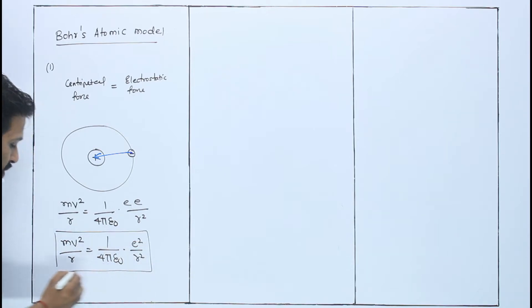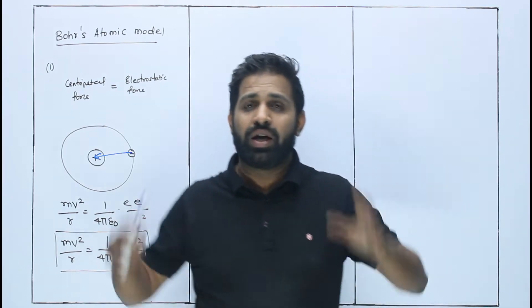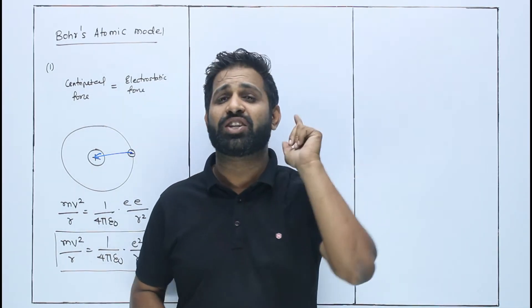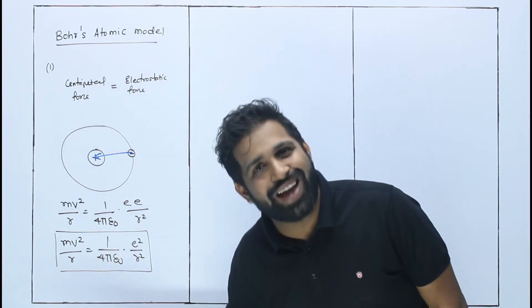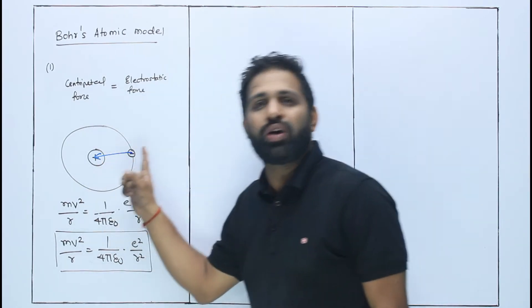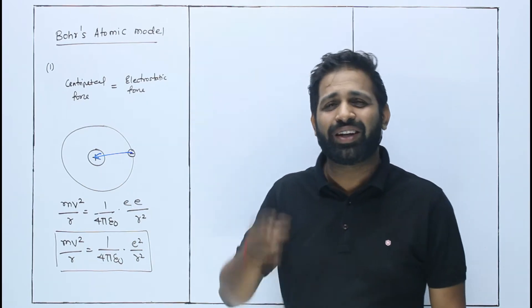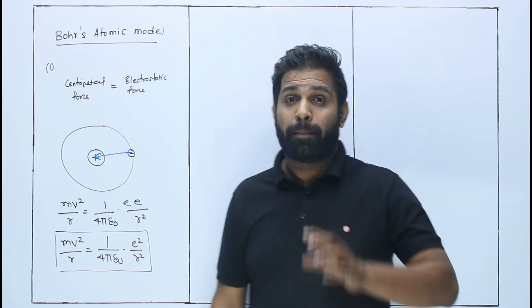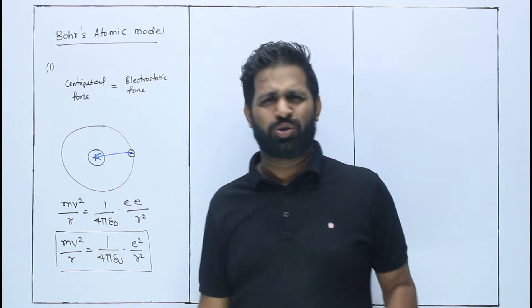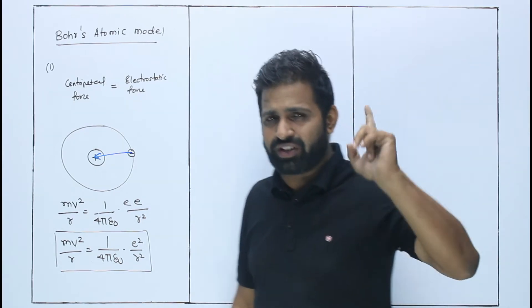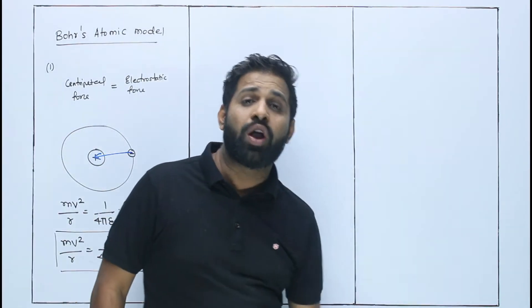Bohr's first postulate: The electron needs centripetal force to revolve around the nucleus, and that centripetal force is provided by the electrostatic force between proton and electron. Bohr studied hydrogen because it has one electron and one proton, though when we do derivations we'll introduce generalized things. First point: electron revolves around the nucleus in circular orbit, and necessary centripetal force is provided by the electrostatic force between nucleus and electron. Done.